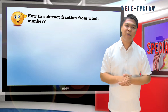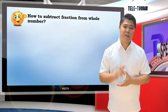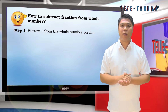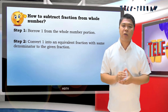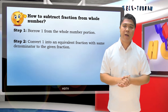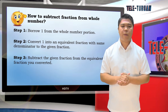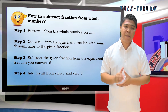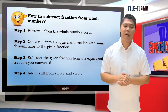Again, how to subtract a fraction from a whole number: Step 1, borrow 1 from the whole number. Step 2, convert 1 into an equivalent fraction with the same denominator as the given fraction. Step 3, subtract the given fraction from the equivalent fraction you converted. Step 4, add the results of Step 1 and Step 3.